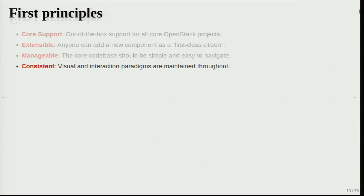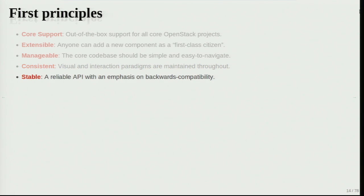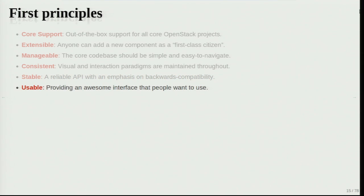That consistency was actually a big problem in the very early days because it was all copy-paste from one piece to another, and little changes would creep in so things would be slightly different from place to place. It should also be stable — from my background in open source, I really believe in backwards-compatible APIs and version-to-version stability. And lastly, it needs to be usable. If it's not usable, we're just failing at being a dashboard. We want to make an awesome interface that everyone actually enjoys using, not just slogs through because it's there.